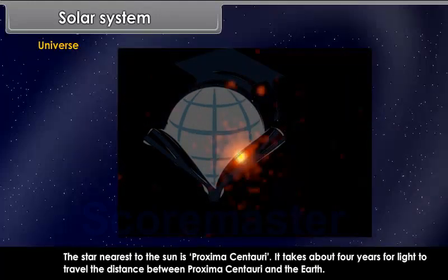The star nearest to the sun is Proxima Centauri. It takes about four years for light to travel the distance between Proxima Centauri and the Earth.